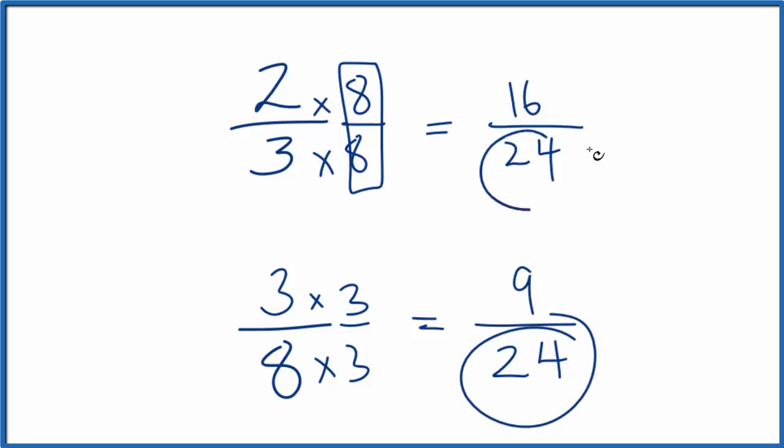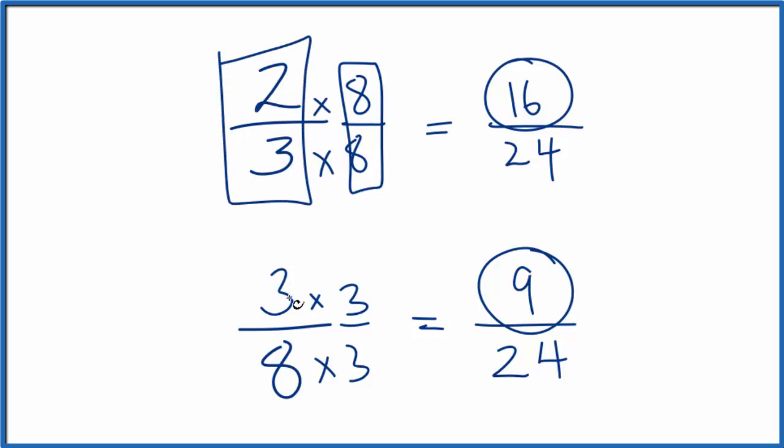Now, the denominator, it's the same. So we can compare the numerator. And we can see right away that 16 is larger than 9. So 2 thirds, that's going to be larger than 3 eighths. It'll actually be 7 24ths larger.